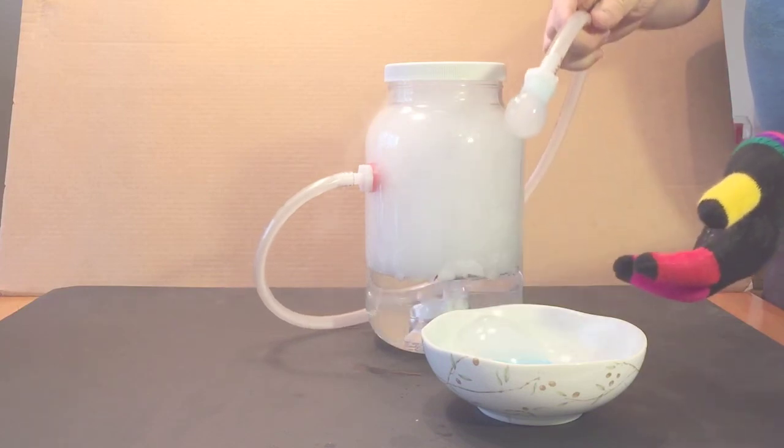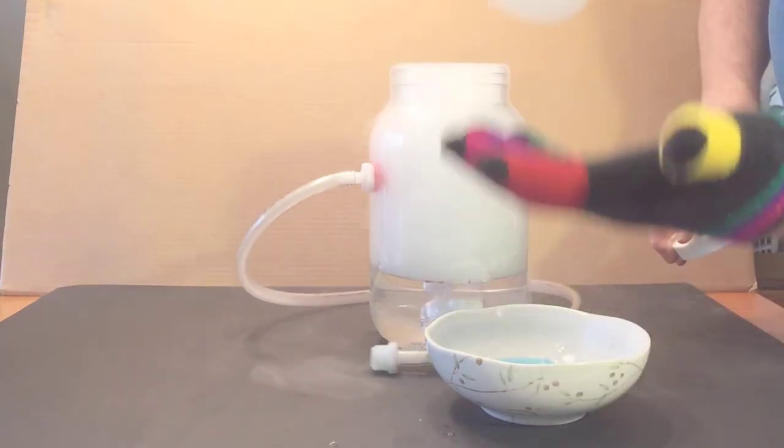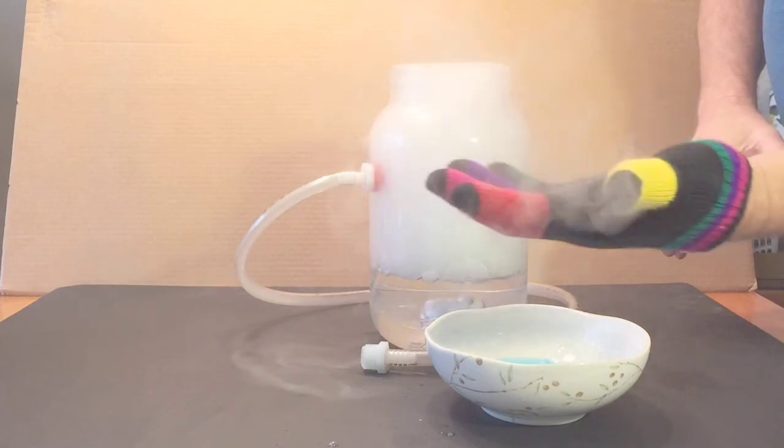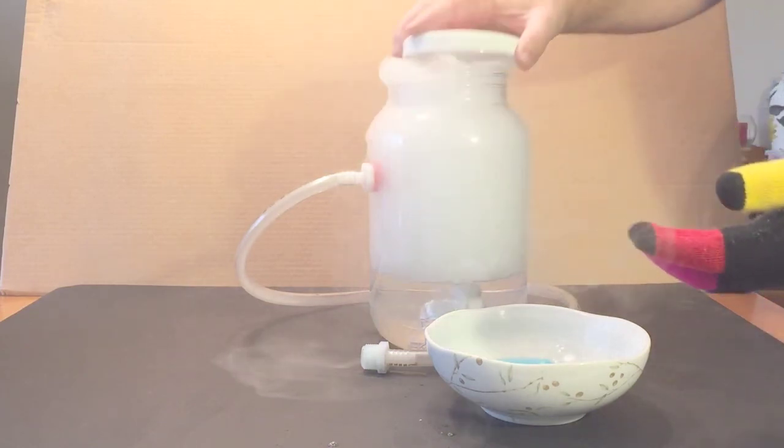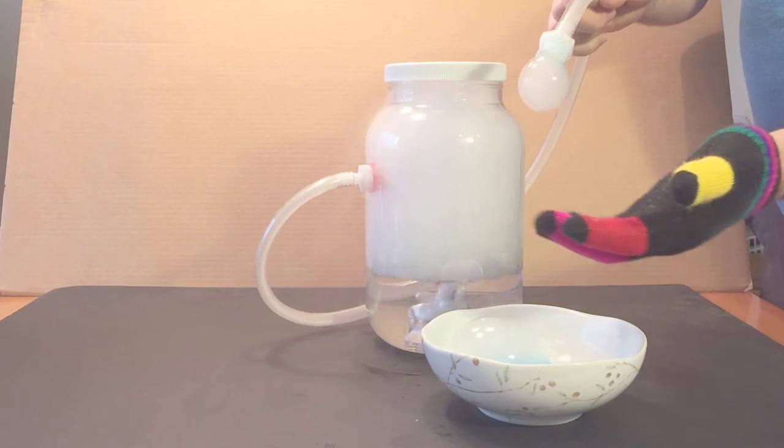The way the dry ice generator works is the dry ice and water make carbon and oxide. When the lid is put on top, it pushes it out the tube and hits the bubble solution on the way out which traps the fog.